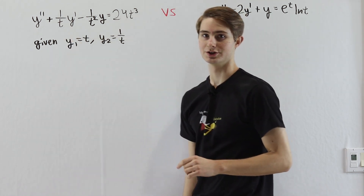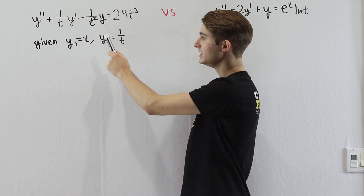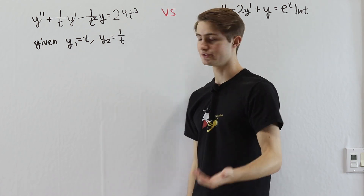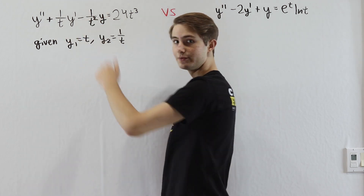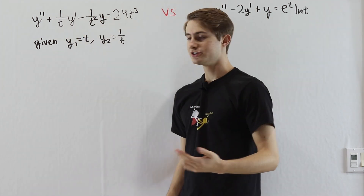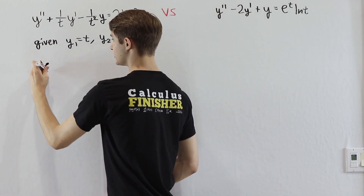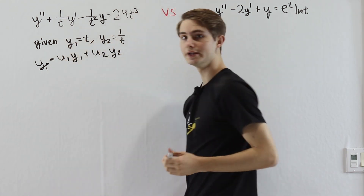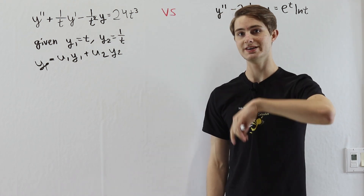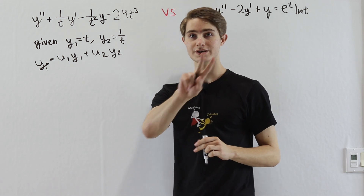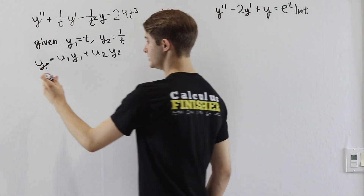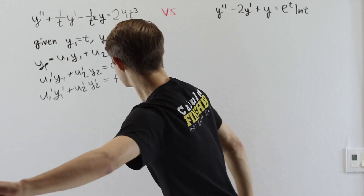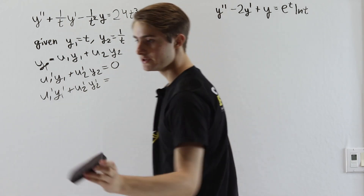Starting with the first differential equation. We're given y1 = t and y2 = 1/t as the two complementary solutions — plugging them in yields zero. When we do variation of parameters, we let our particular solution yp equal u1·y1 + u2·y2. The f(t) on the right side is 24t³.